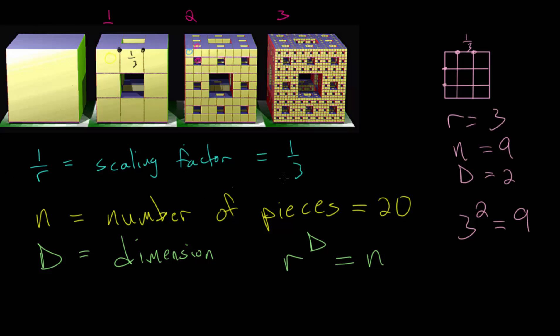So let's plug in our variables, and we can set up an equation involving d, and then we can solve for that missing variable. Since we know that r is three, or one over r is one third, meaning that r is three, n is 20. Plugging these into our equation, we have three raised to the d power is equal to 20.